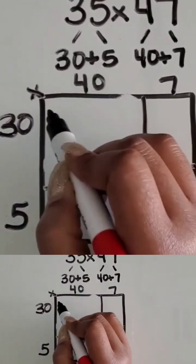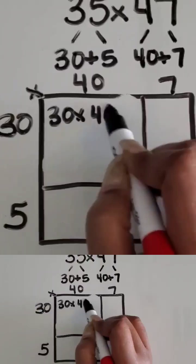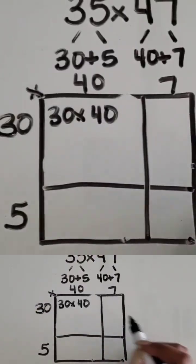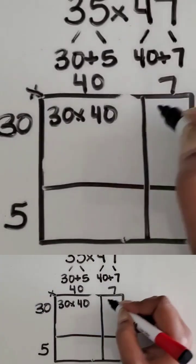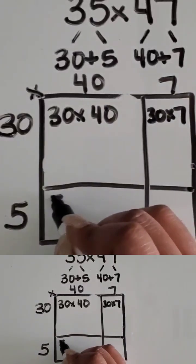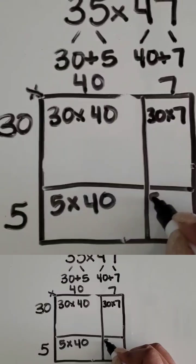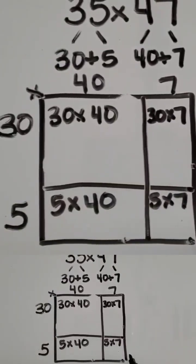To write the expressions in each space that they're finding the partial products for, we have 30 times 40 here, 30 times 7 here, 5 times 40 here, and then 5 times 7 in this smaller piece at the bottom.